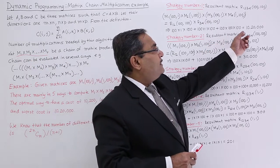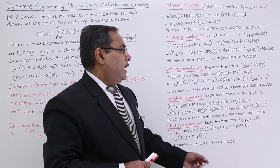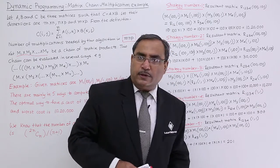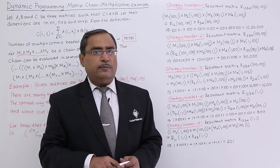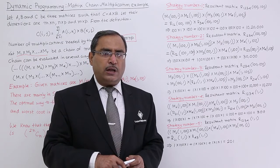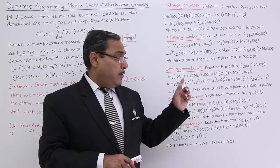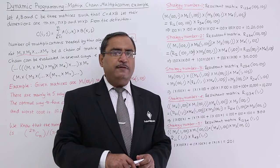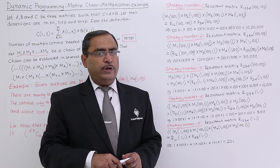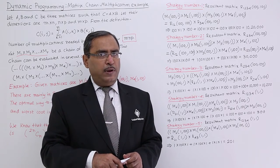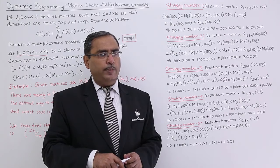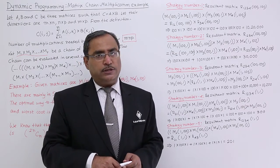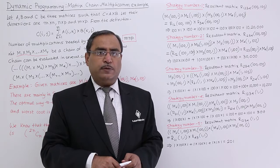The worst case is 1,020,000, the optimal is 10,200, and the best case is 201 multiplications. I have demonstrated all 5 different ways to perform the multiplications, showing how the complexity ranges from maximum to minimum. If such a question comes to calculate computational complexity, you can proceed in this way. Thanks for watching.